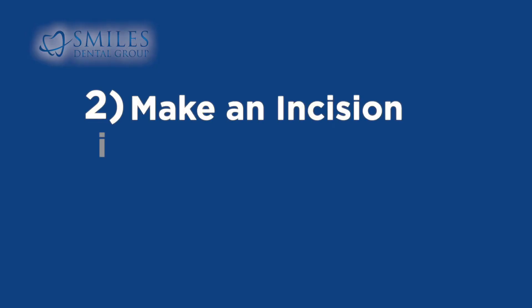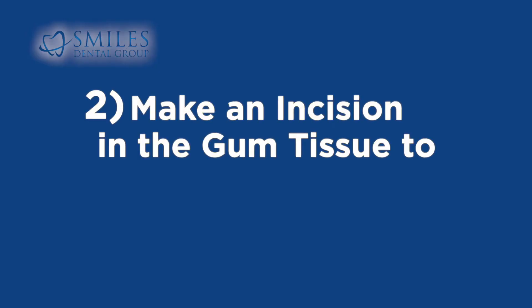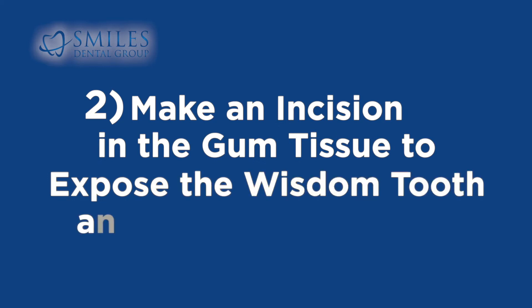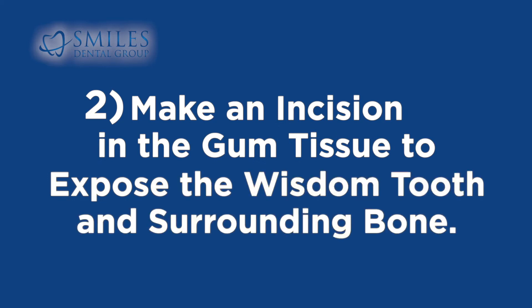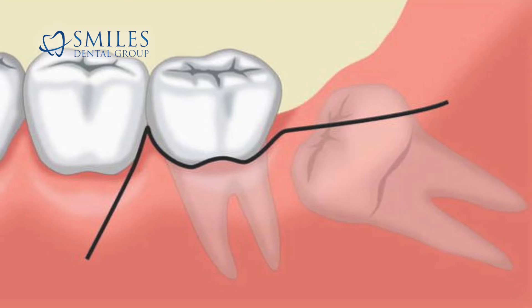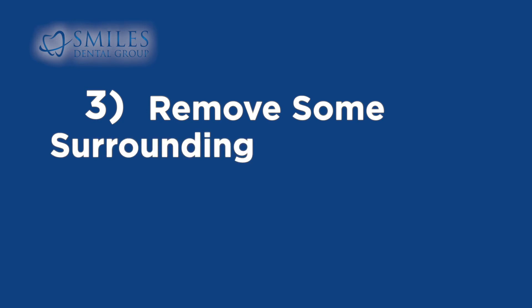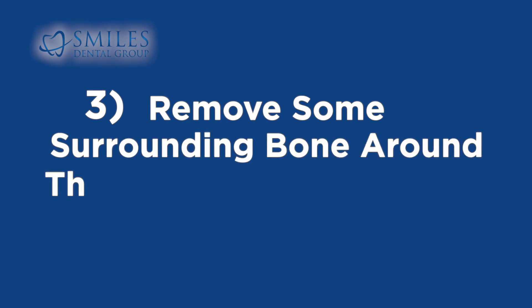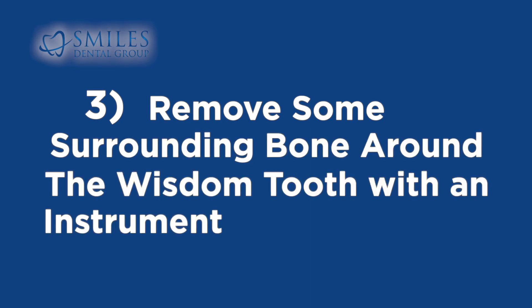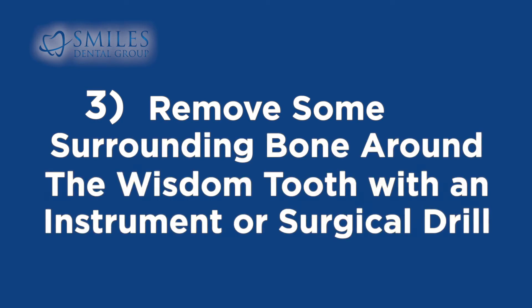2. Make an incision in the gum tissue to expose the wisdom tooth and surrounding bone. 3. Remove some surrounding bone around the wisdom tooth with an instrument or surgical drill.